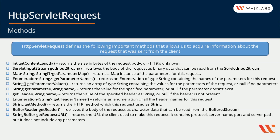We can use getParameterMap, which returns a map instance of the parameters for this request. We can use getParameterNames, which returns an enumeration of type string containing the names of the parameters for this request. We can use getParameterValues, which returns an array of type string containing the values for the parameters of this request, or null if no parameters. We can use getParameter, which returns the value for the specified parameter or null if the parameter doesn't exist.